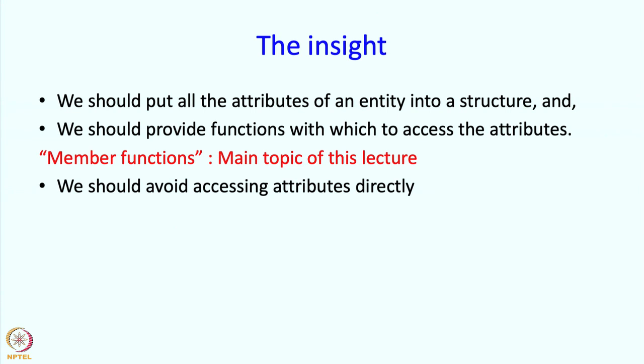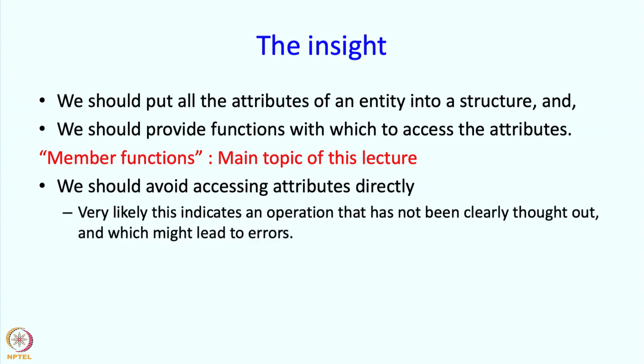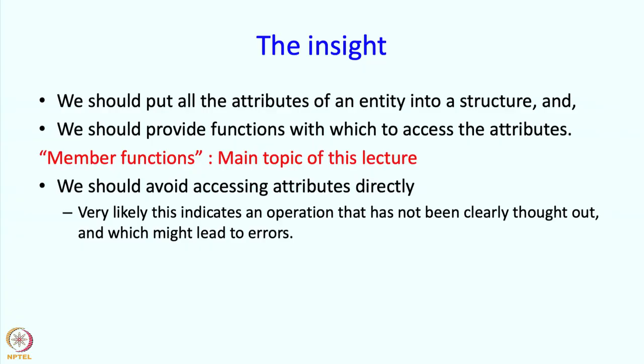So to put it differently, we should avoid accessing attributes directly. Why is that? Well, very likely this indicates that we are doing an operation that has not been clearly thought through and therefore maybe it contains errors. So clearly something real or even abstract but something that we clearly understand like a queue or a vector has its own logic and that logic has to be incorporated into functions and we are going to describe this notion of member functions which is going to be most useful for incorporating such logic.